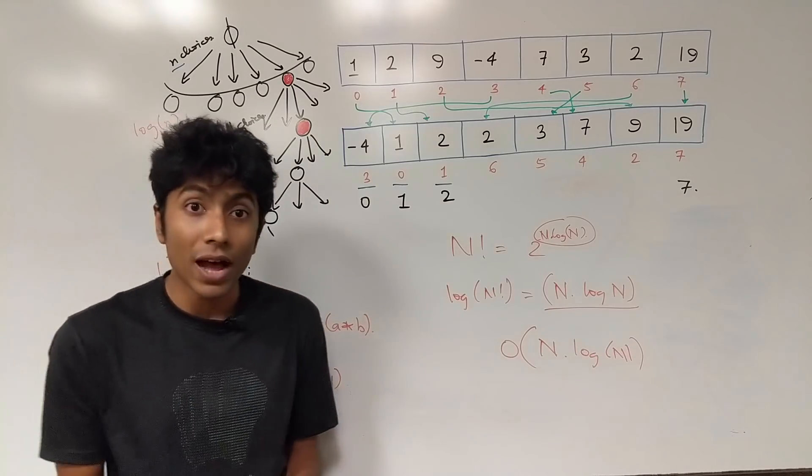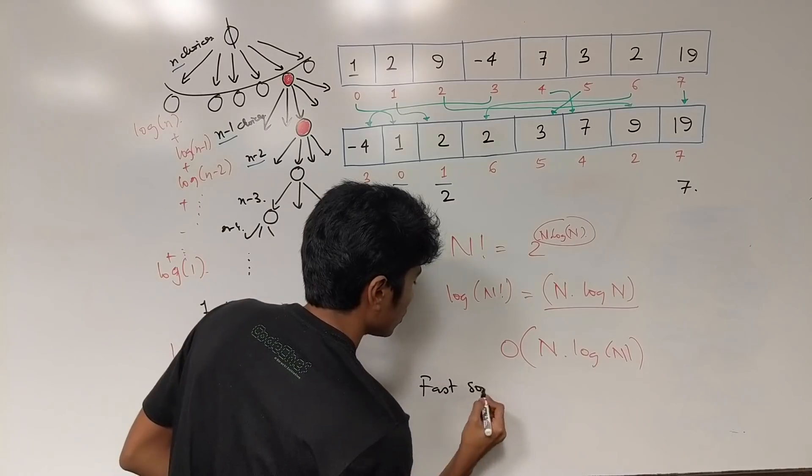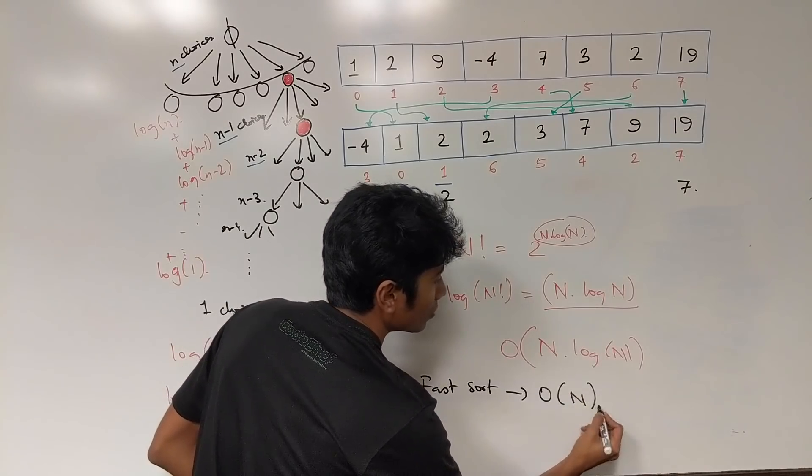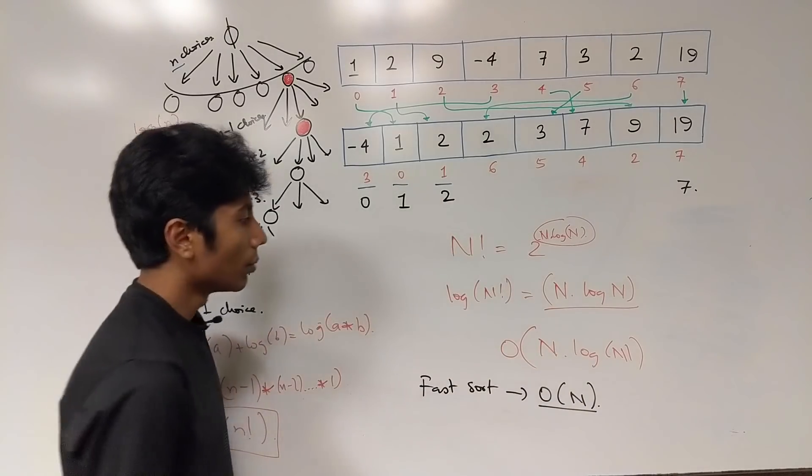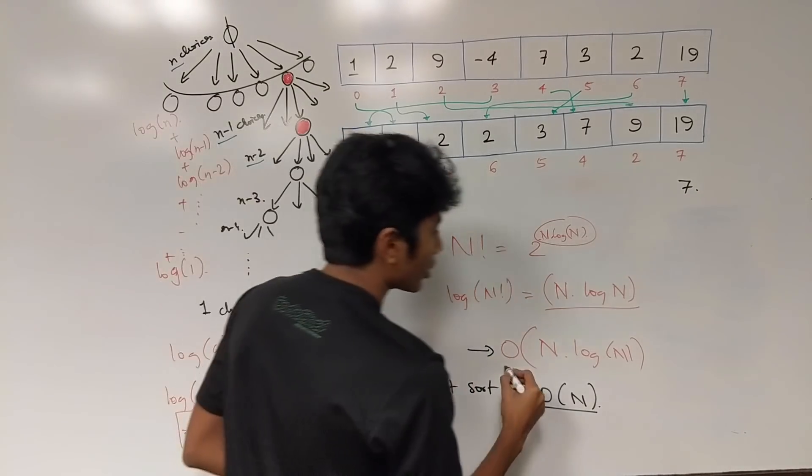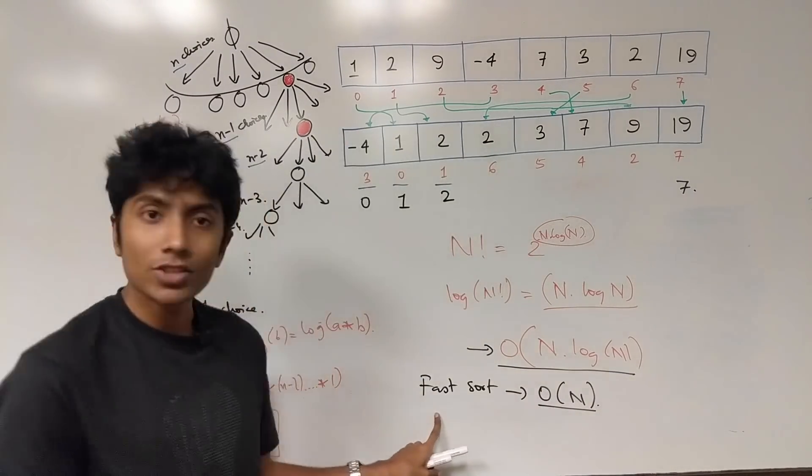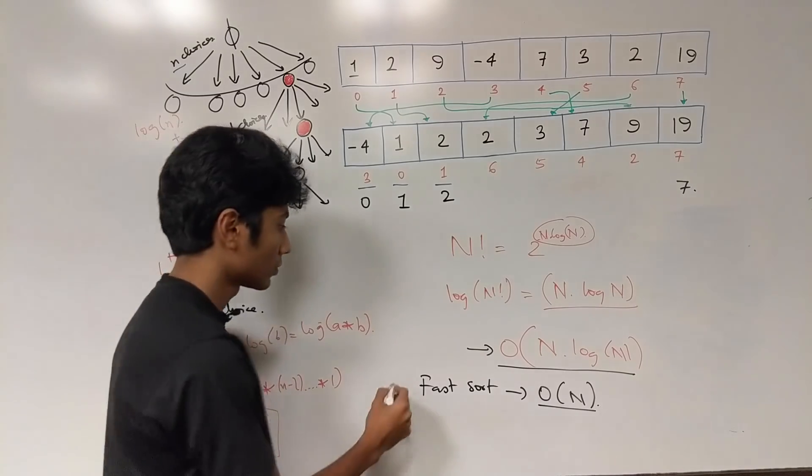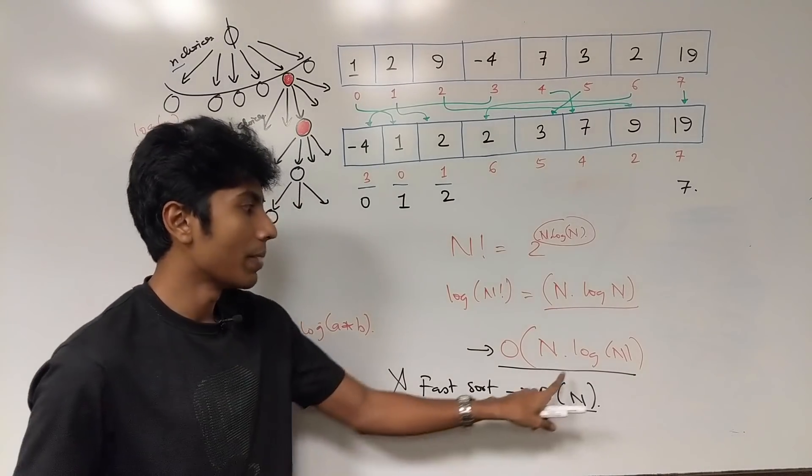Which means that the minimum required time to sort an array is this thing order n log n. We had an algorithm called fast sort. It was giving us an order n worst case scenario. But we just proved that the fastest possible algorithm for sorting is going to take us order n log n. Which means fast sort does not exist.